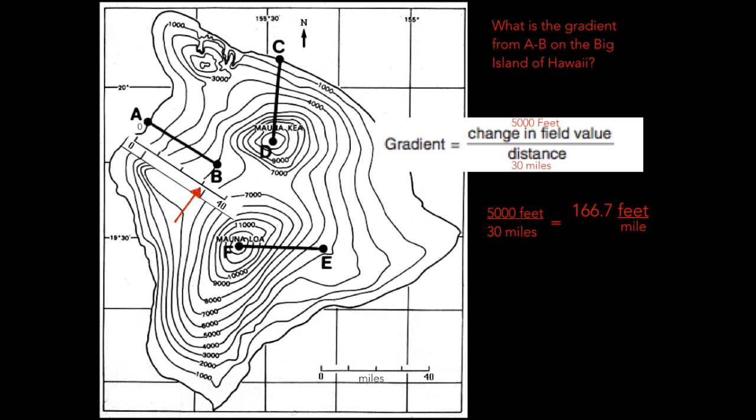So every mile we'd travel, the elevation would go up 166.7 feet or down if we were going in the downhill direction, which is a pretty steep gradient.